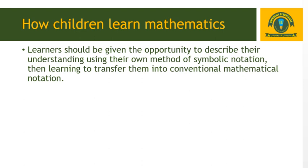Learners should be given the opportunity to describe their understanding using their own method of symbolic notation, then learning to transfer them into conventional mathematical notations. First, give the child the opportunity to symbolically represent what they have learned, and if they do it correctly, well and good. If they cannot use the symbolic notation correctly, the teacher's role is to correct their understanding.